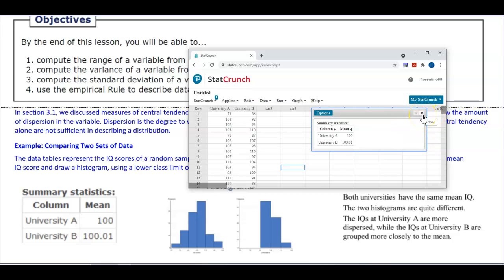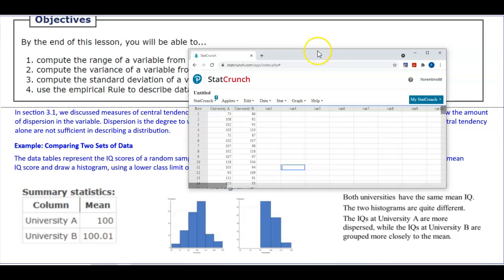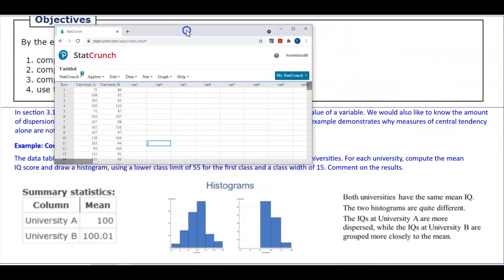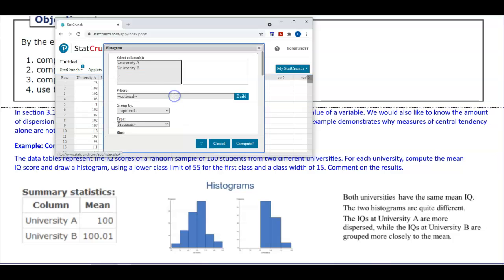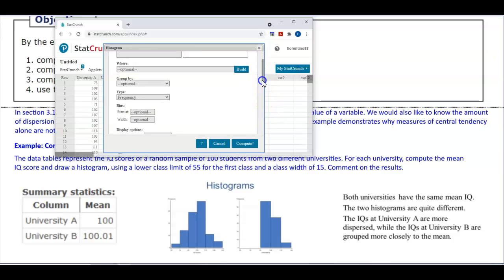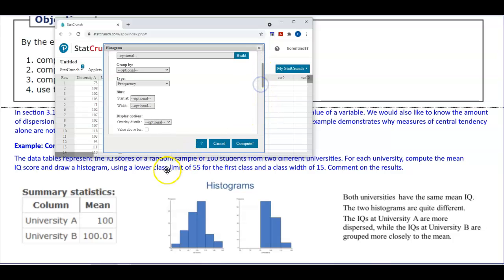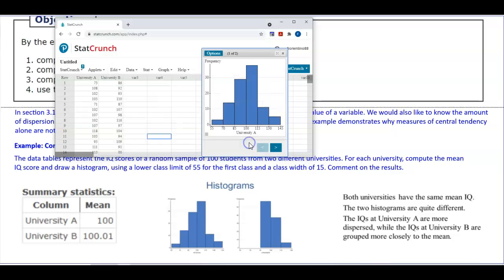Now what we want to do is create the histograms. We're going to select Graph, go to Histogram. We're going to highlight both of those, because we're going to do both of them. Then we're going to come down here, and we're going to start at a lower class limit of 55, and then we're going to have the class width of 15, and then we're going to select Compute.